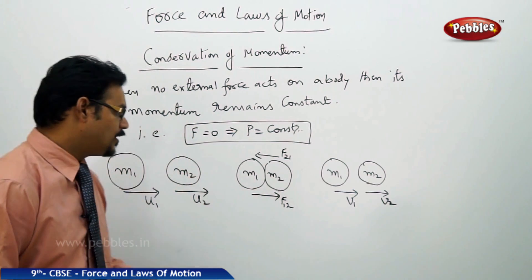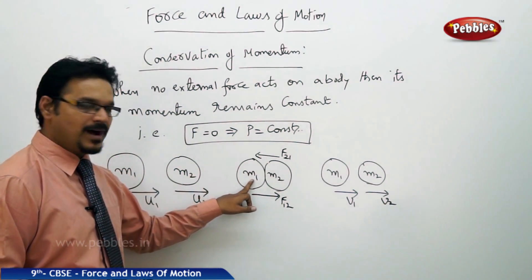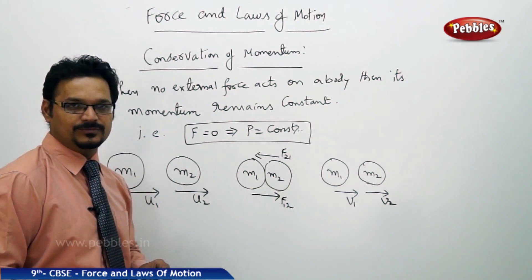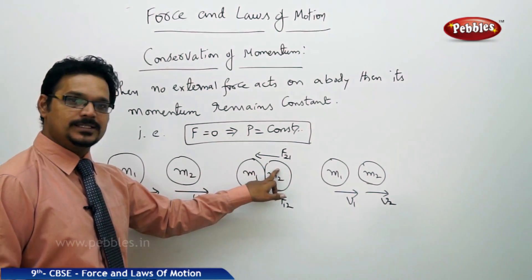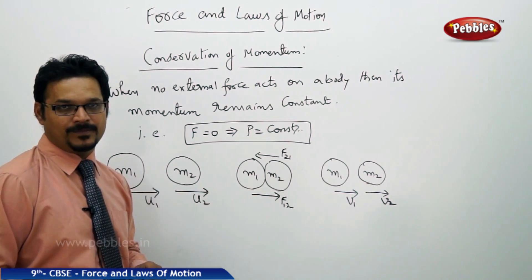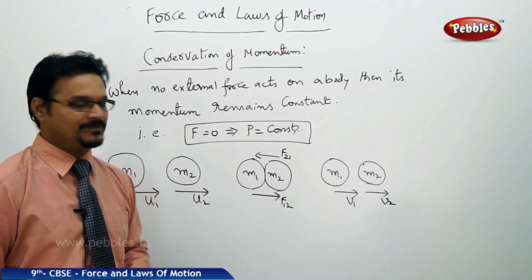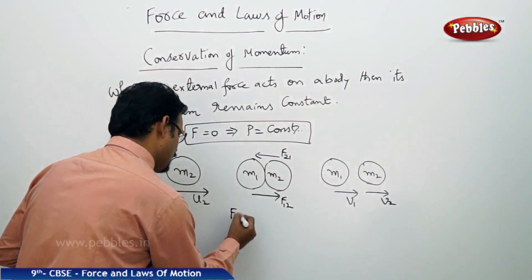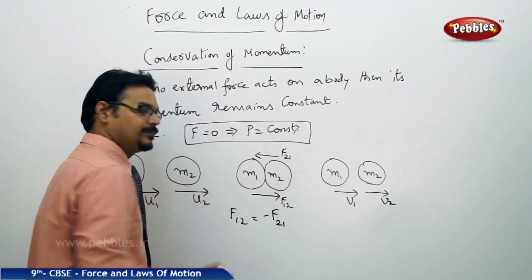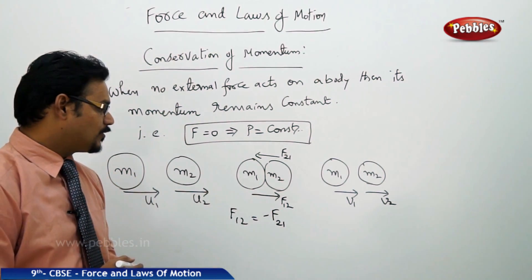Now while they are colliding, see carefully, mass m1 applies force F12 on m2. Similarly, m2 mass applies force F21 on m1. These two forces are equal and opposite. F12 equals F21 and opposite.